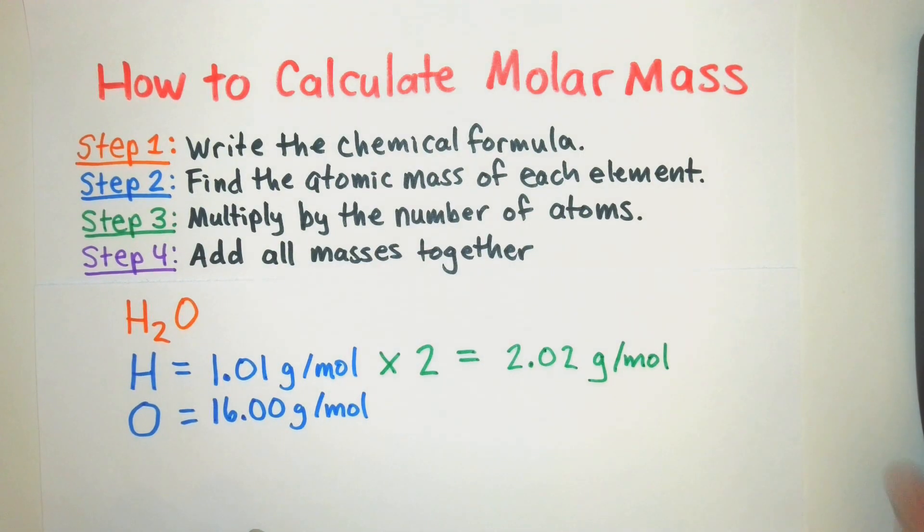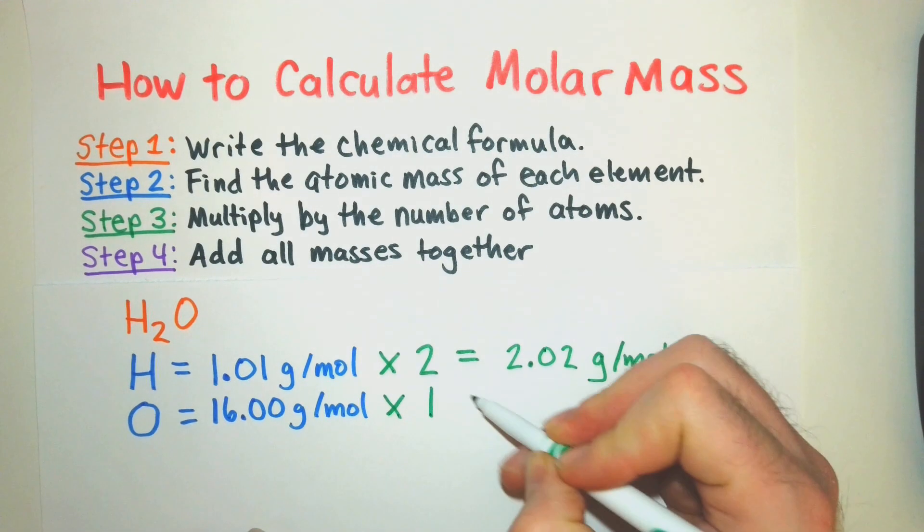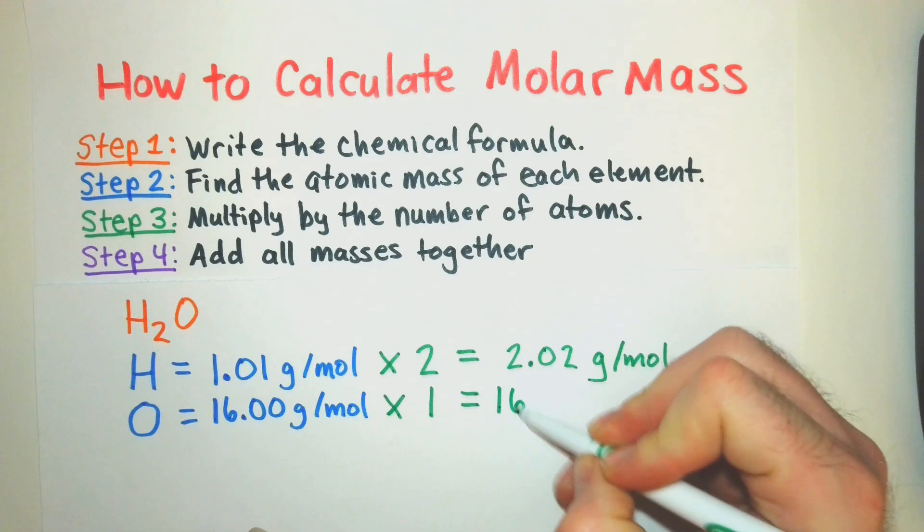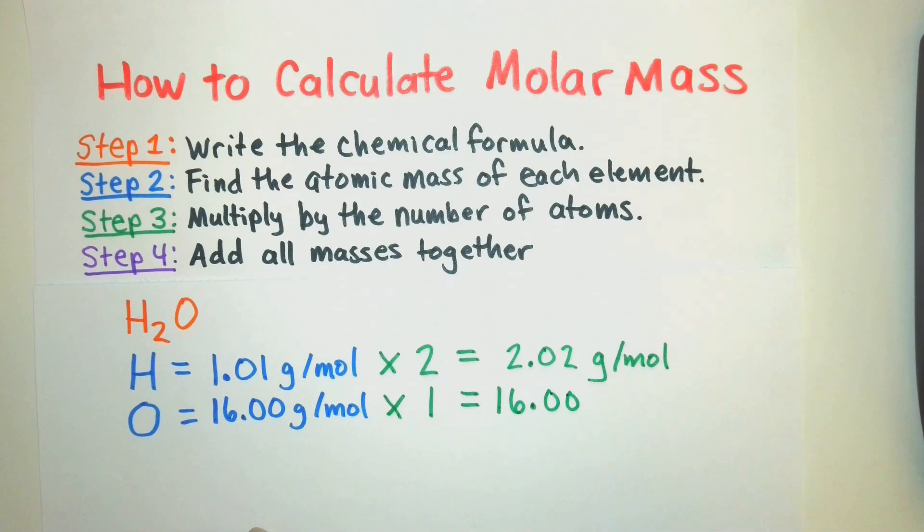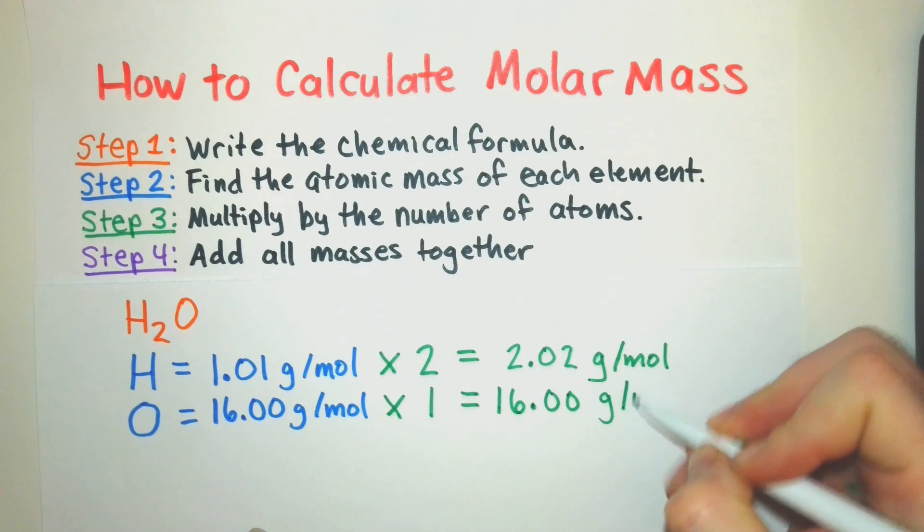Alright, next for our oxygen, we only have one of those. No subscript there. So that indicates there's one oxygen atom in that molecule. Well, any number times one is itself. So we have 16.00 grams per mole.